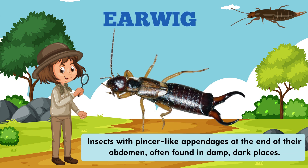Earwig. Insects with pincer-like appendages at the end of their abdomen, often found in damp, dark places.